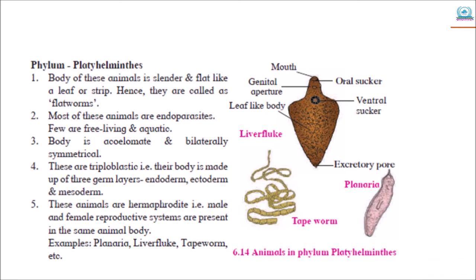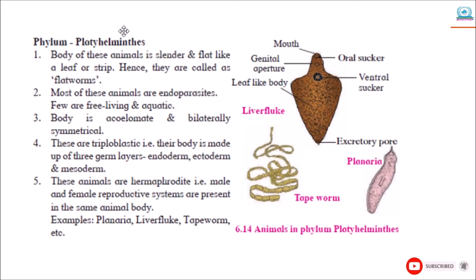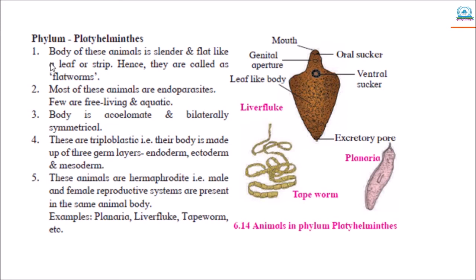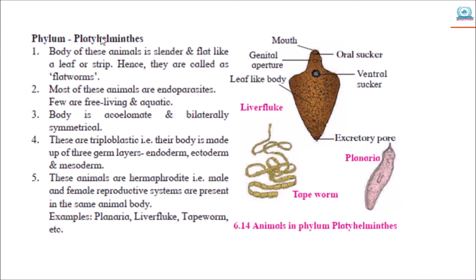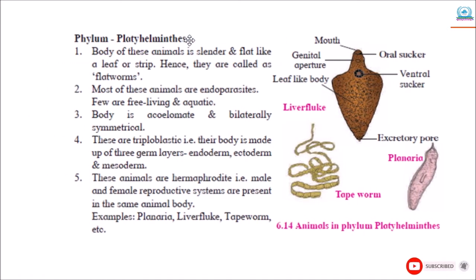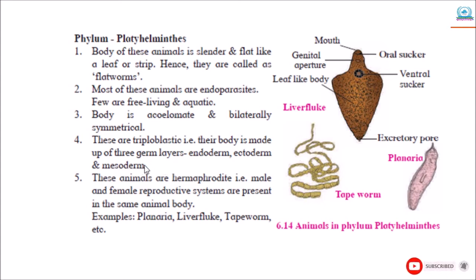The name itself tells that 'platy' means flat body. So the body of this animal is slender and flat, leaf-like or strip-like. Hence, they are called flatworms. Most of these animals are endoparasites, meaning they are parasites living inside another organism's body. Few are free-living and aquatic. The body is acoelomate and bilaterally symmetrical. These are triploblasts — that is, their body is made up of three germ layers: endoderm, ectoderm, and mesoderm. These animals are hermaphrodites.